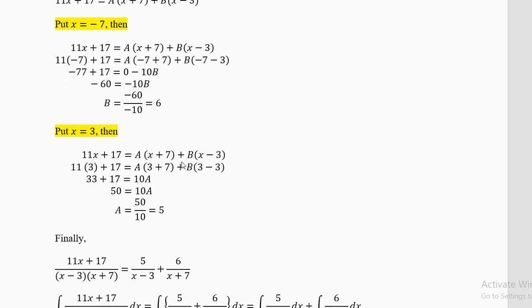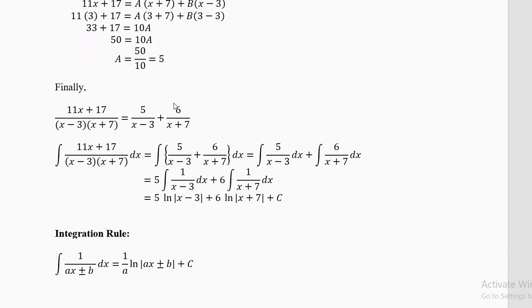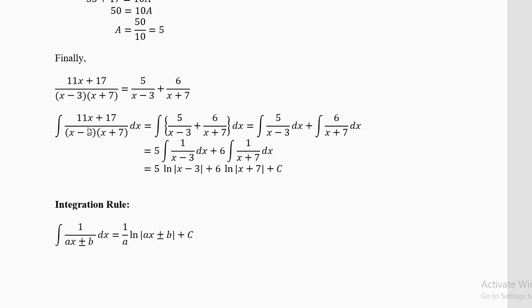To eliminate B, put x = 3: B(3 − 3) = 0. Left side: 11(3) + 17 = 33 + 17 = 50. Right side: A(3 + 7) = 10A. So 50 = 10A, giving A = 5. The partial fractions are 5/(x − 3) plus 6/(x + 7).